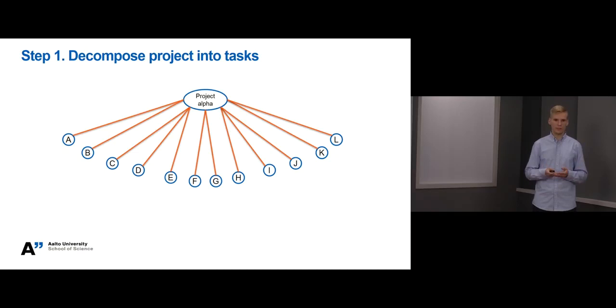In this example, an imaginary project called Project Alpha has been decomposed into tasks running from A to L. In total, this project has 12 different tasks that need to be executed to complete the project.